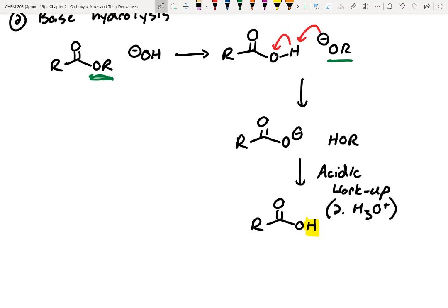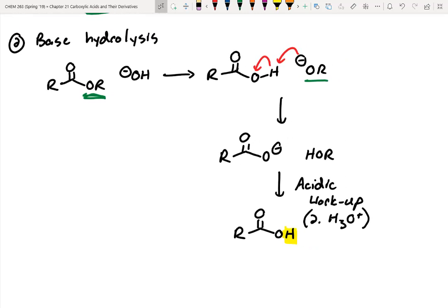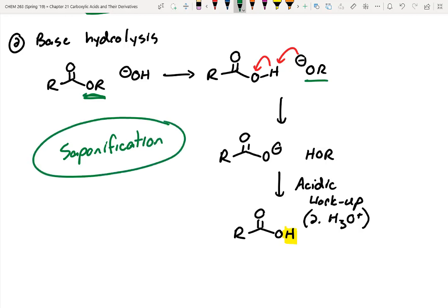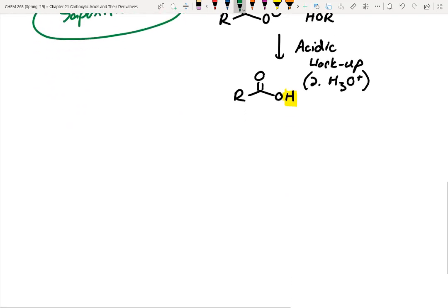The more common name for this type of chemistry is saponification — this is how we make soap. In Fight Club, they steal fat from a liposuction clinic; fat is a bunch of esters, and then they take lye, hydrolyze the fat, and make soap out of it, which they sell back to the people who had liposuction done. It's kind of a morbid movie.